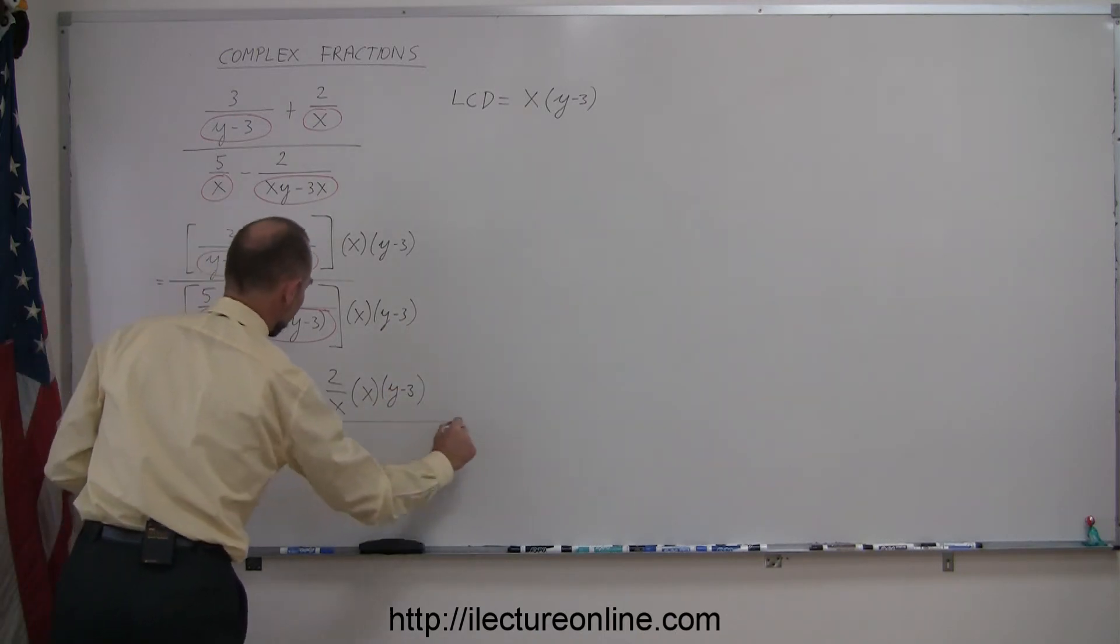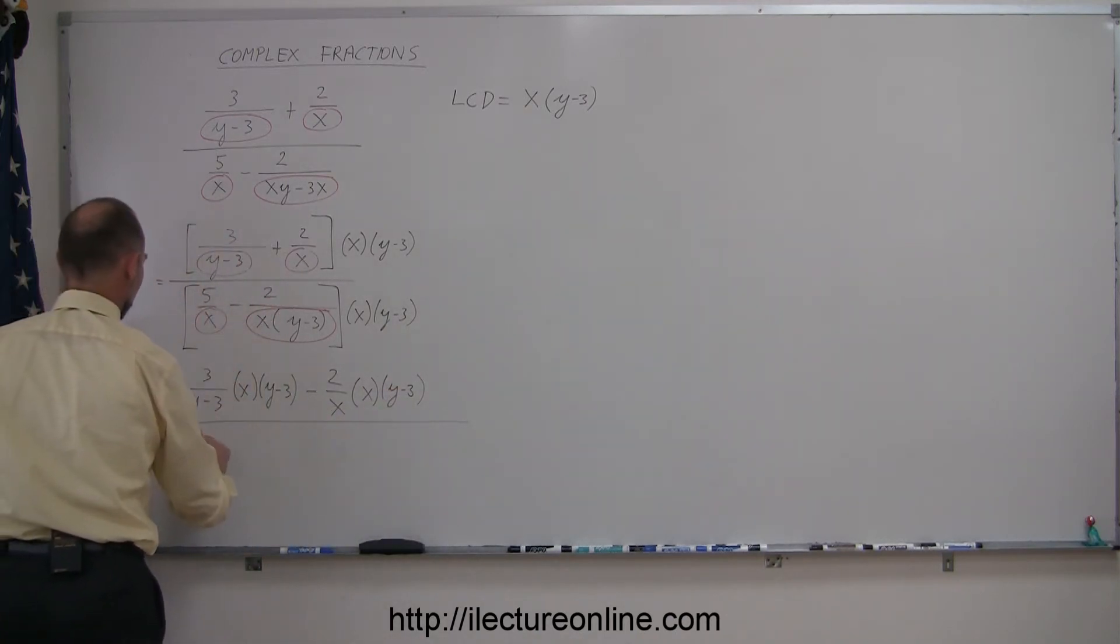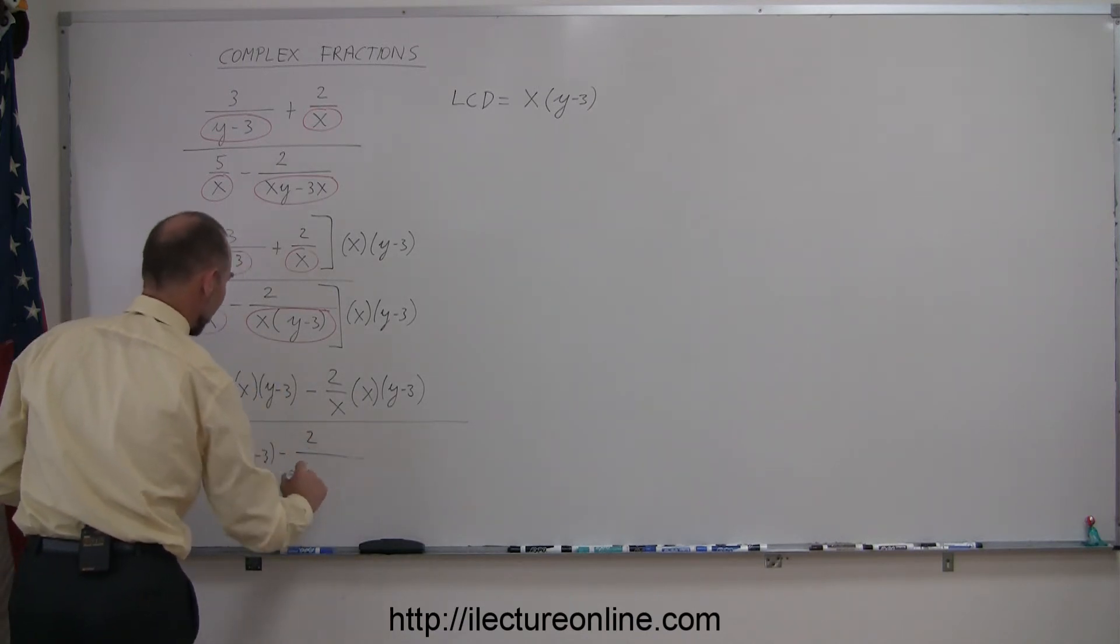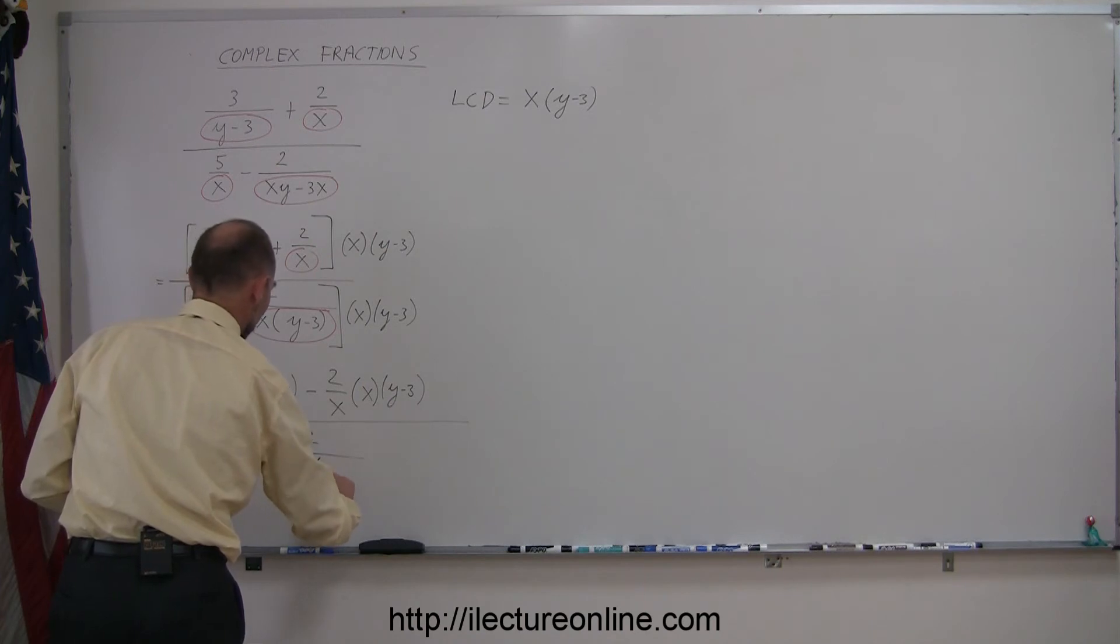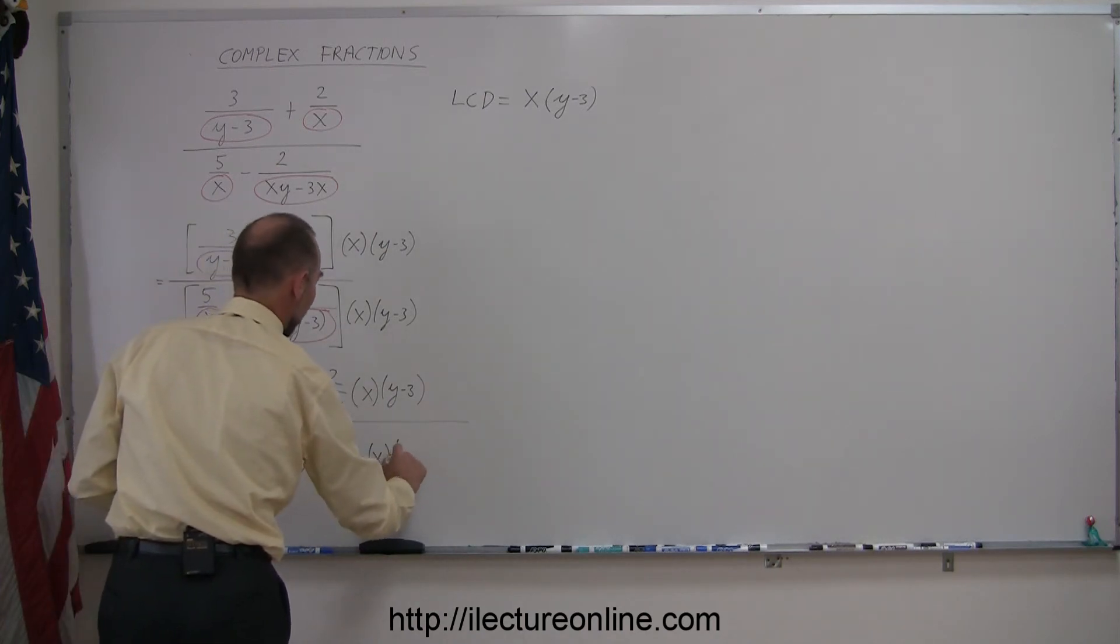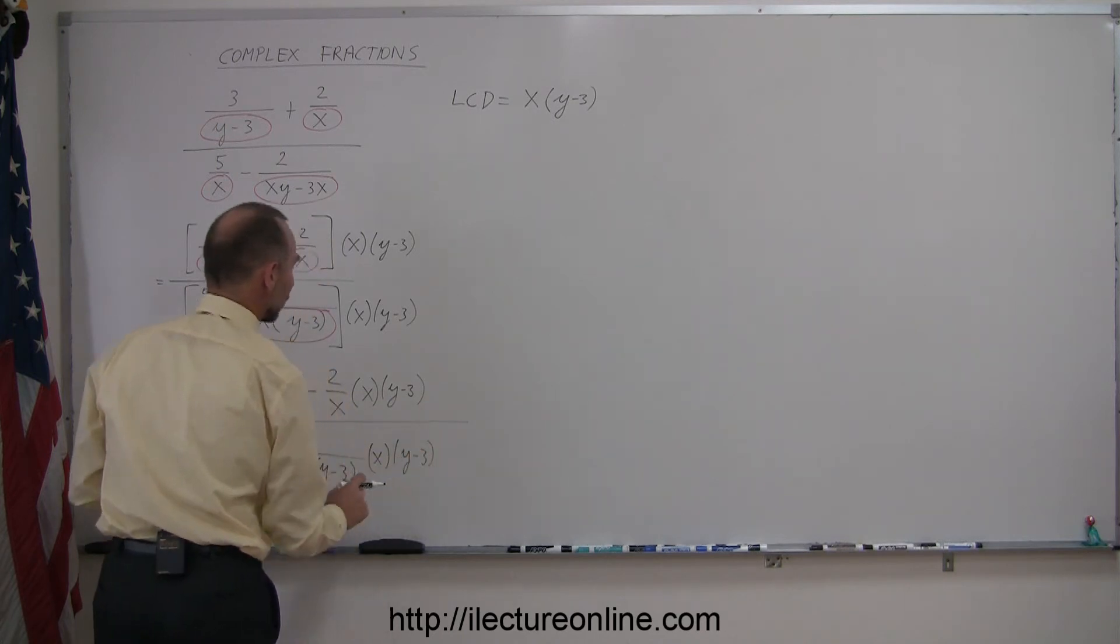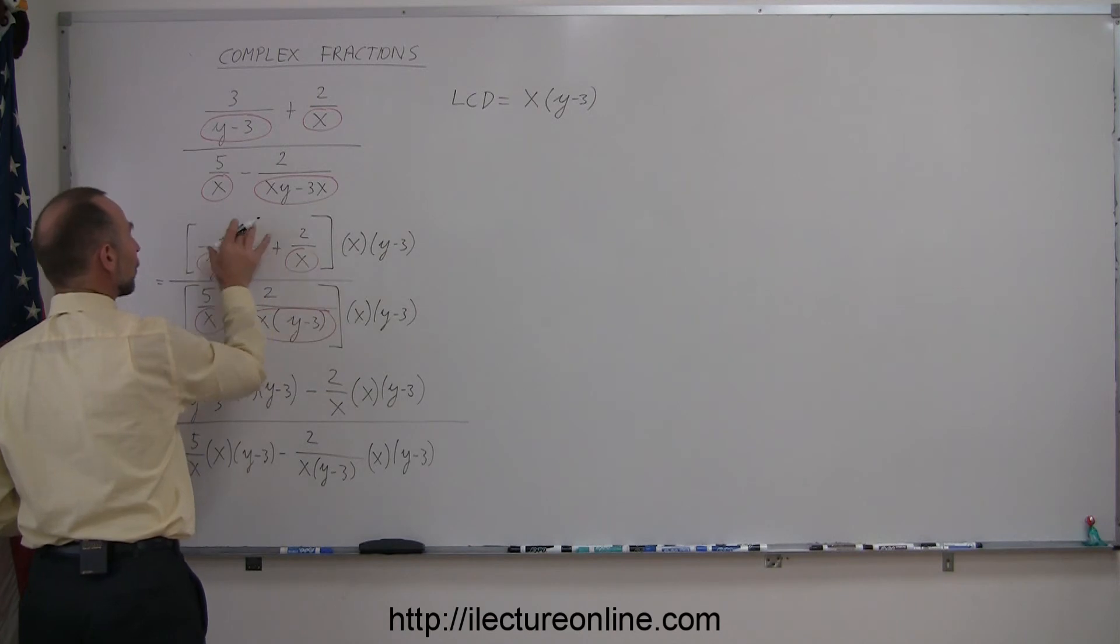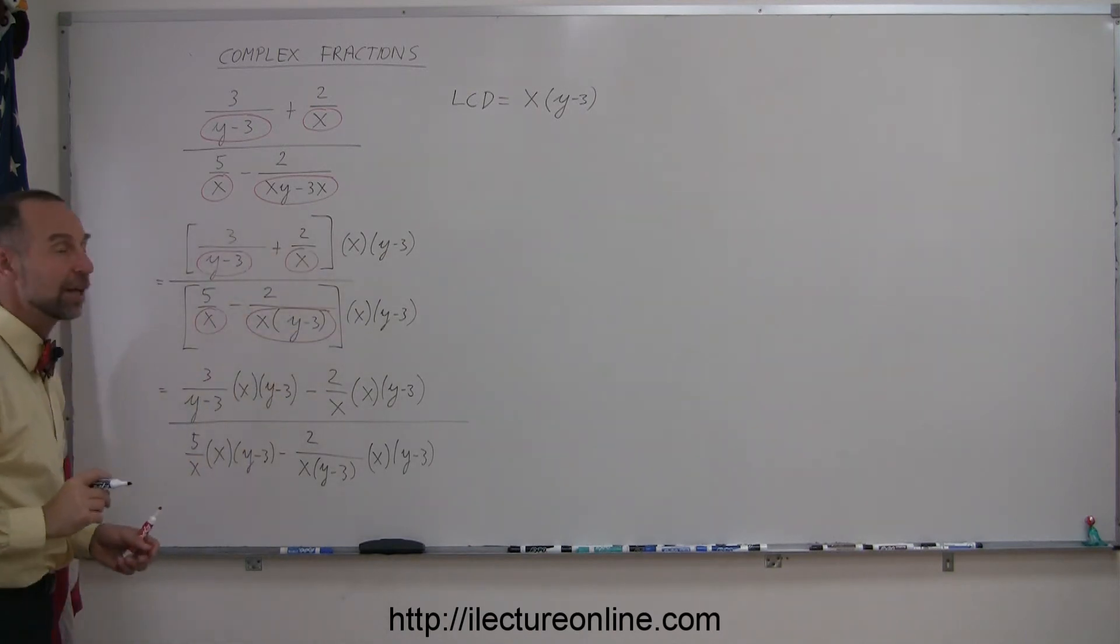Same with the denominator. I take this fraction, 5 over x, and multiply that times x times (y minus 3), minus 2 divided by x times (y minus 3), and multiply that times x times (y minus 3). So simply I distributed the x times (y minus 3) over each of the fractions in my complex fraction.